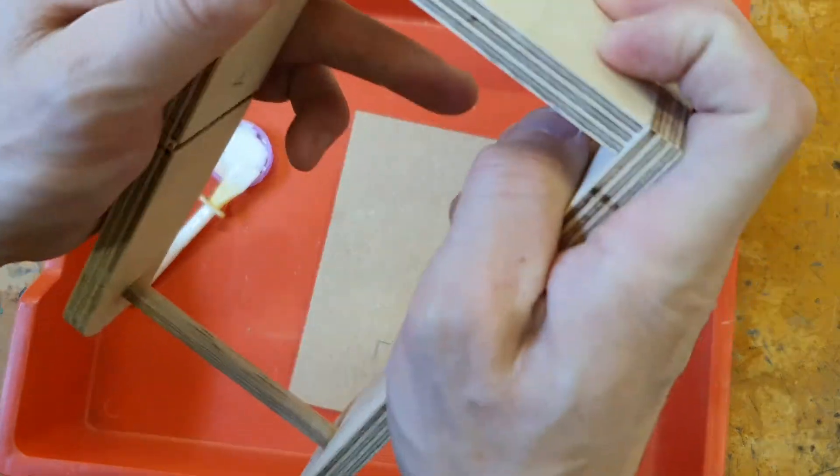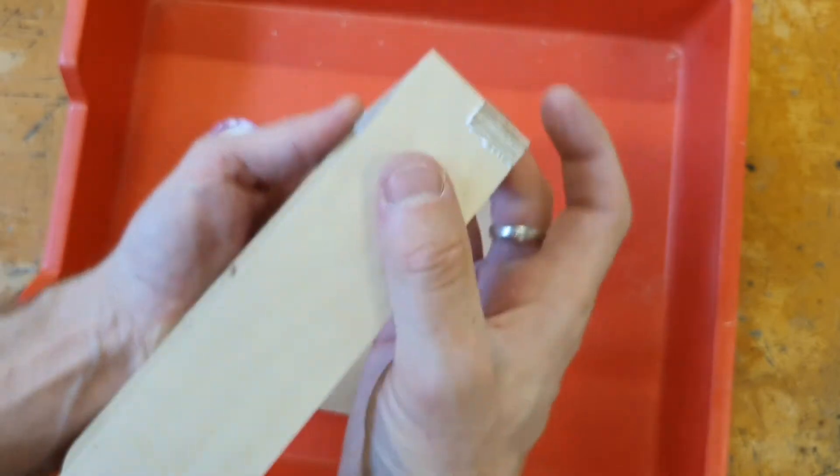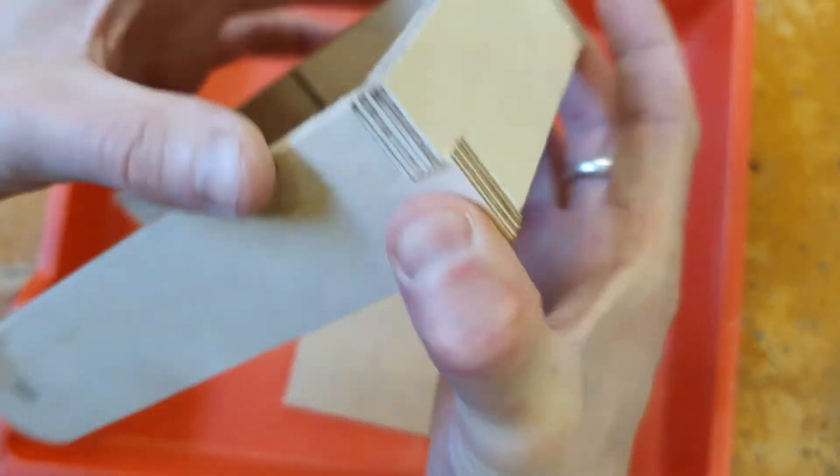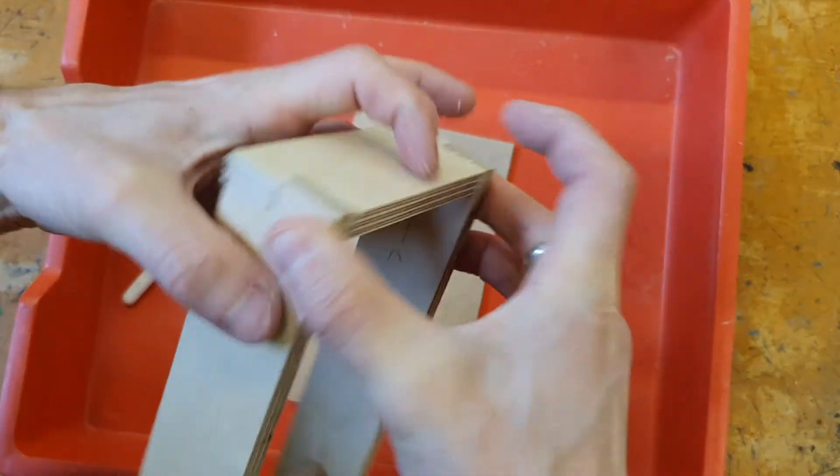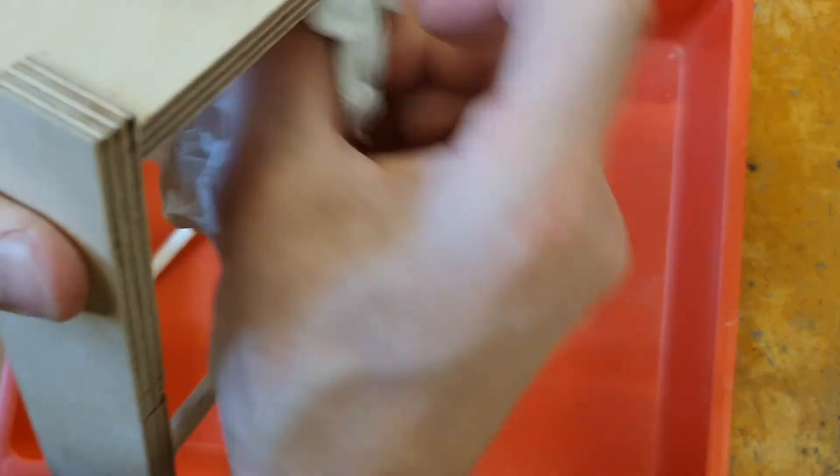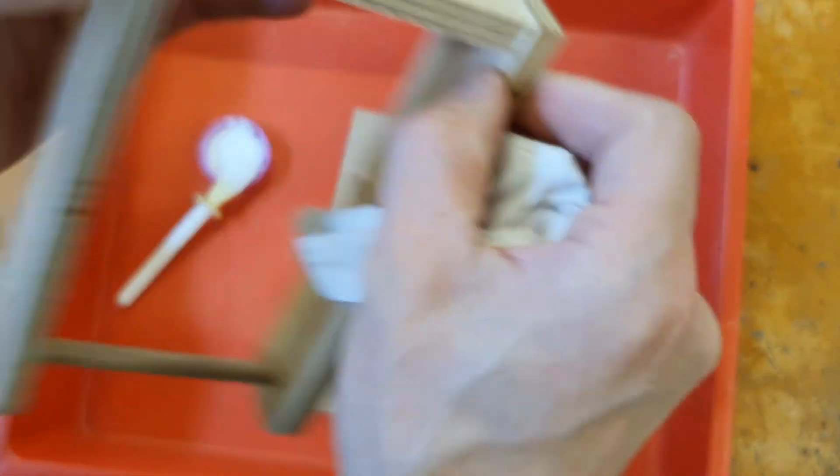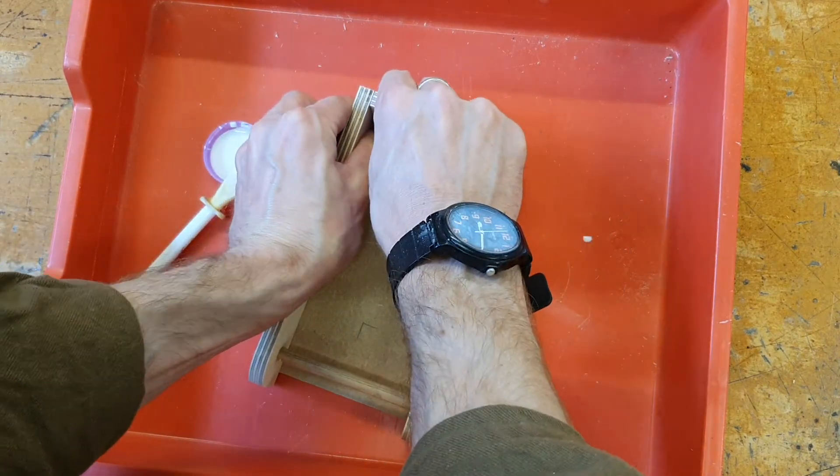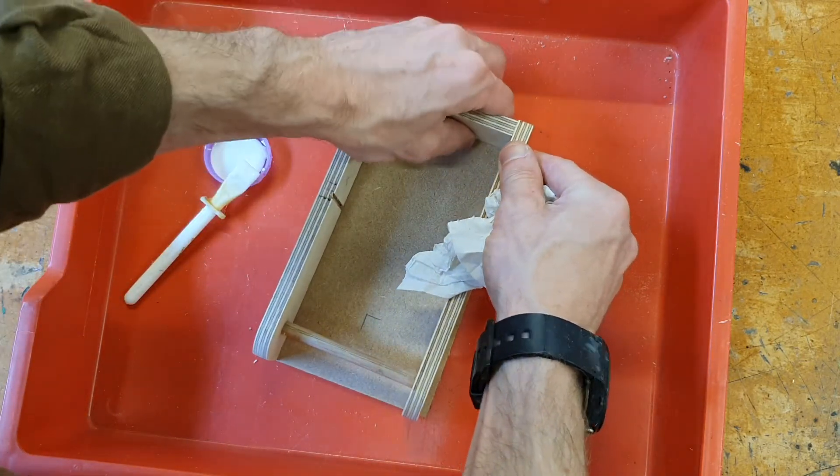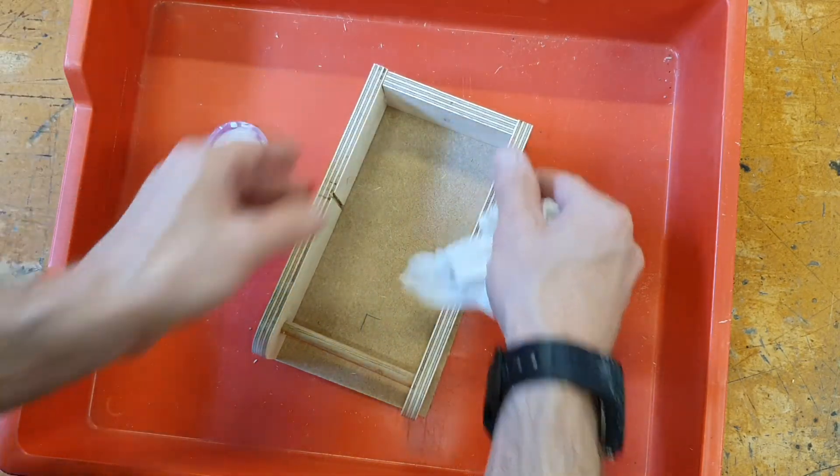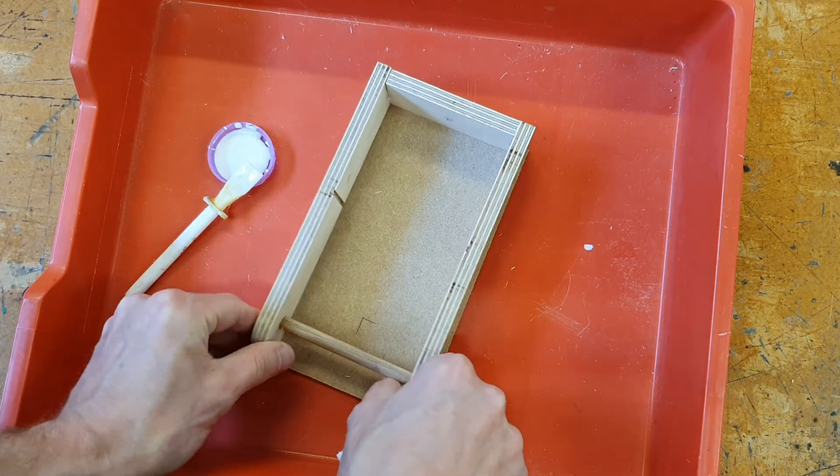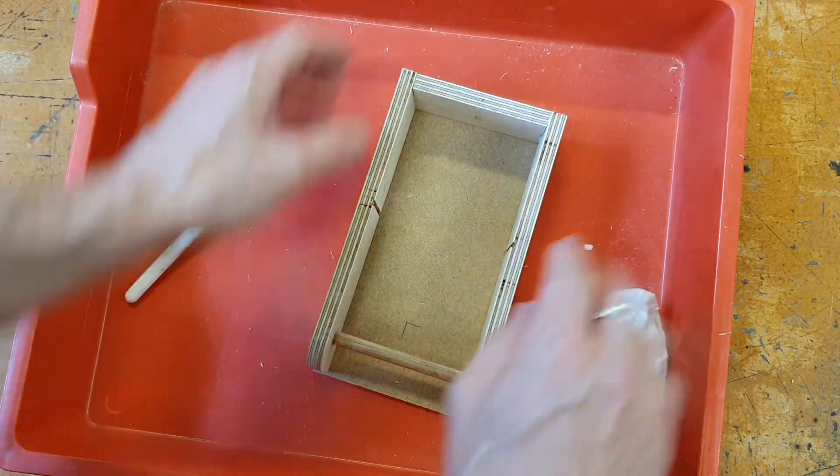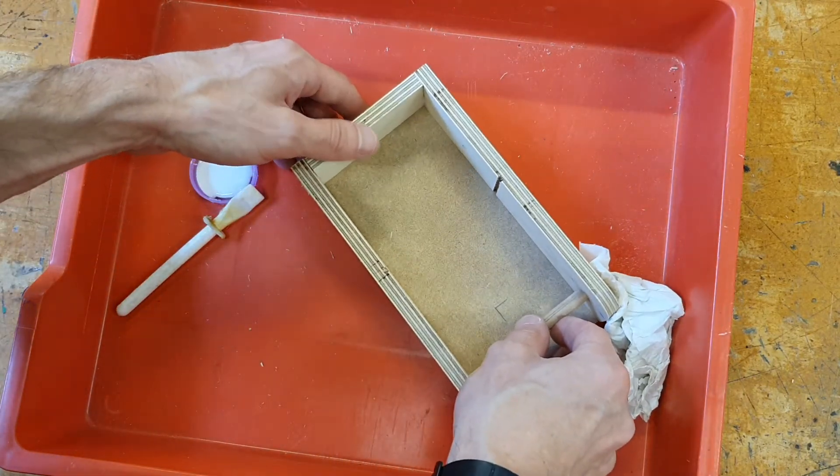Push those into position, pull them together, check for any glue that's oozing out. You want to address that before it dries. There we go. So you can leave that there to dry. Make sure that you've got your name on it.